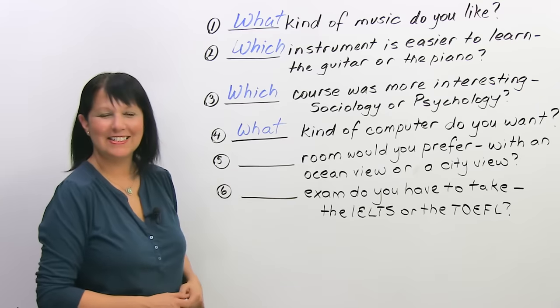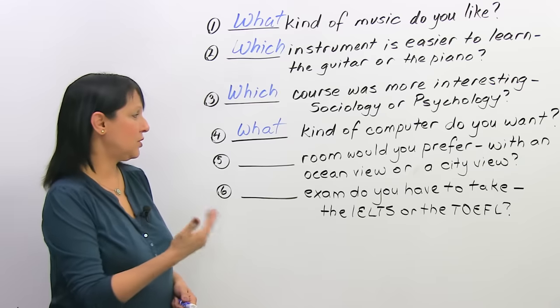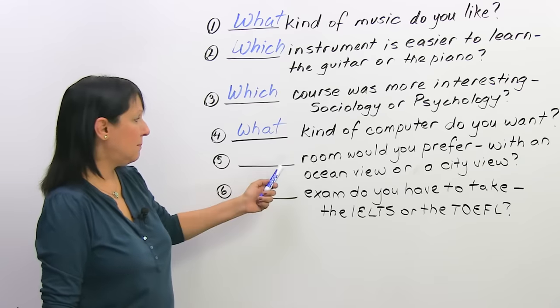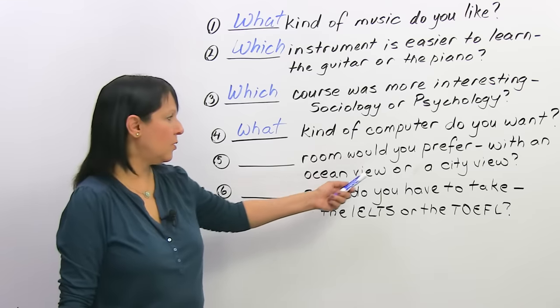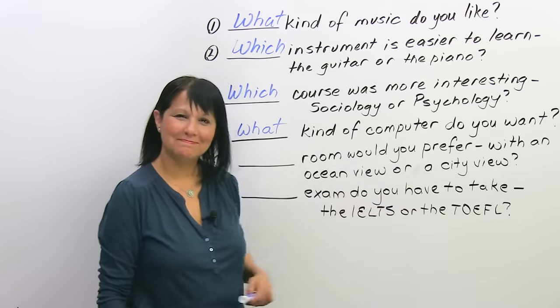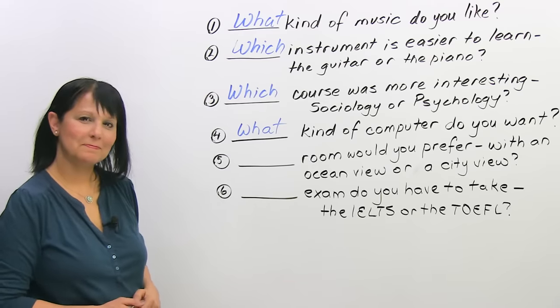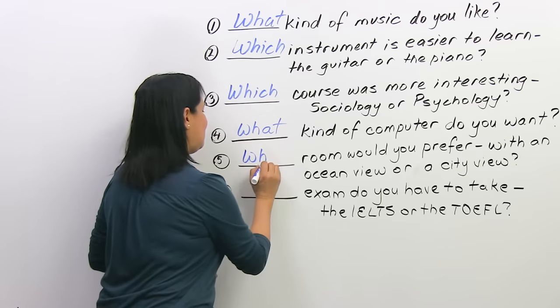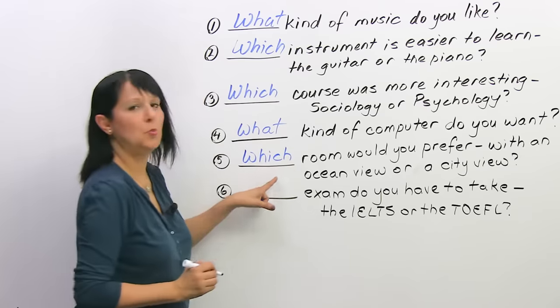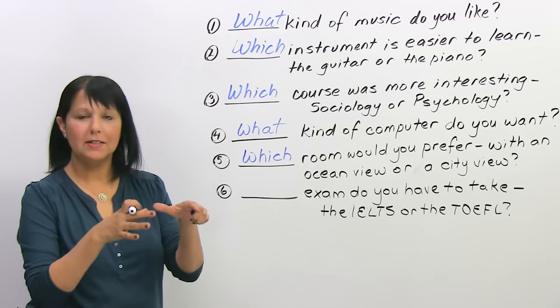Next, you want to make a hotel reservation, and the reservation clerk asks you 'blank room would you prefer? With an ocean view or a city view?' So, what's the right question word to use here? You got it. 'Which' room? Once again, we have specific limited possibilities.